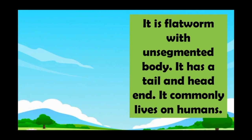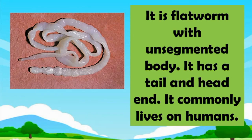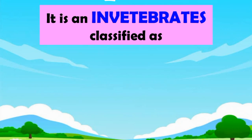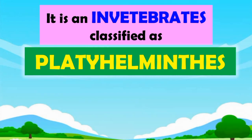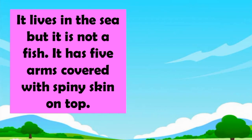Guess what? It is a flatworm with unsegmented body. It has a tail and head end. It commonly lives in humans. What is it? A tapeworm! Correct! Tapeworm is an invertebrate classified as platyhelminth. It has a flat, segmented, and ribbon-like body. It is an endoparasite.